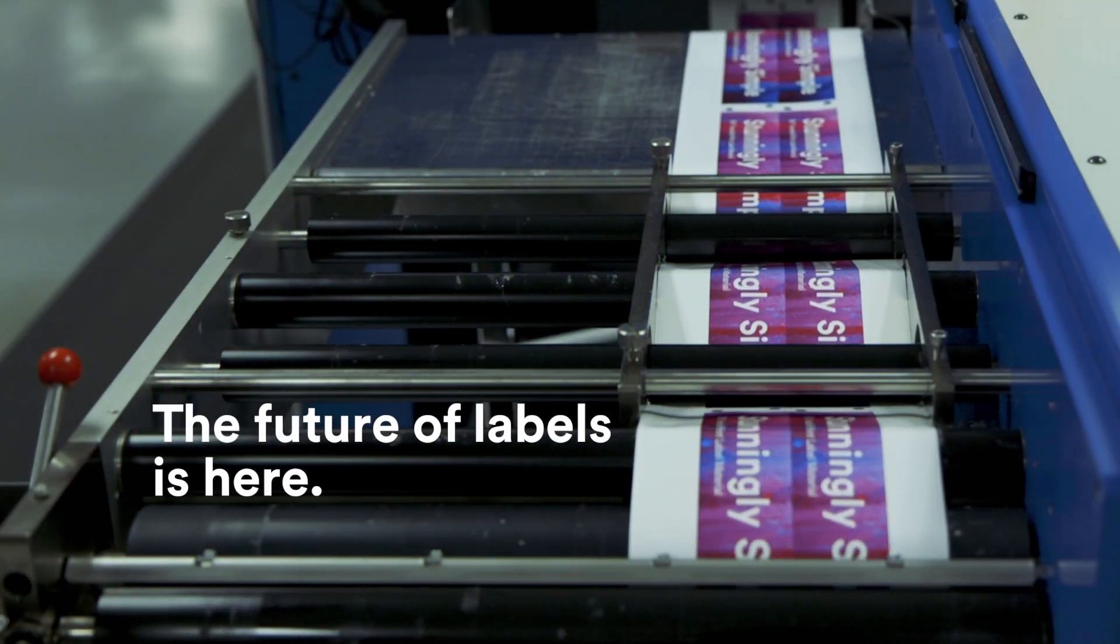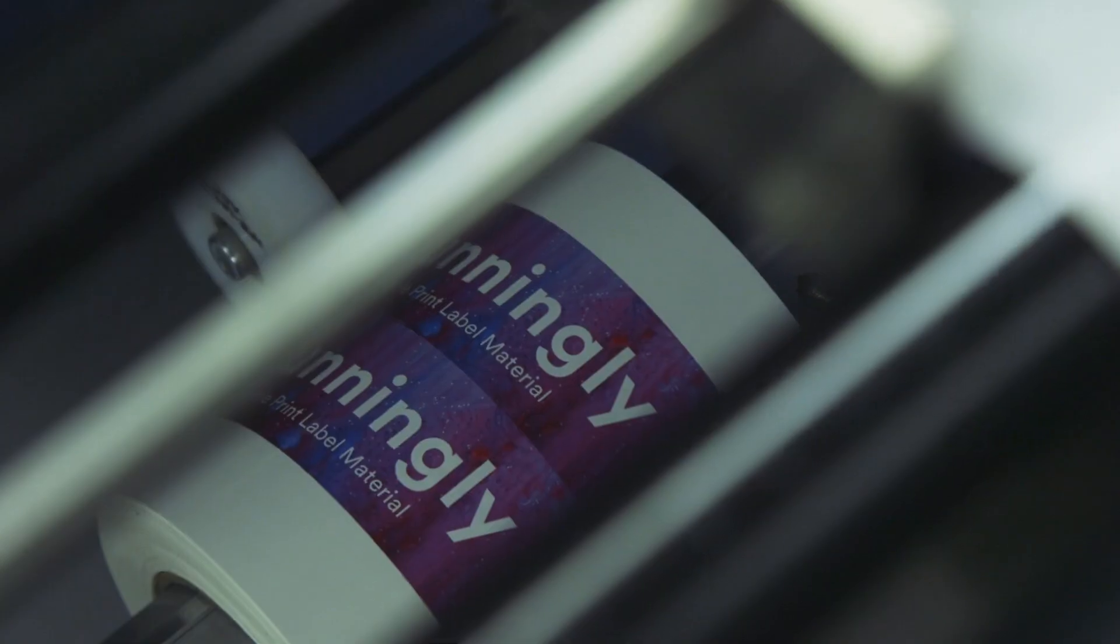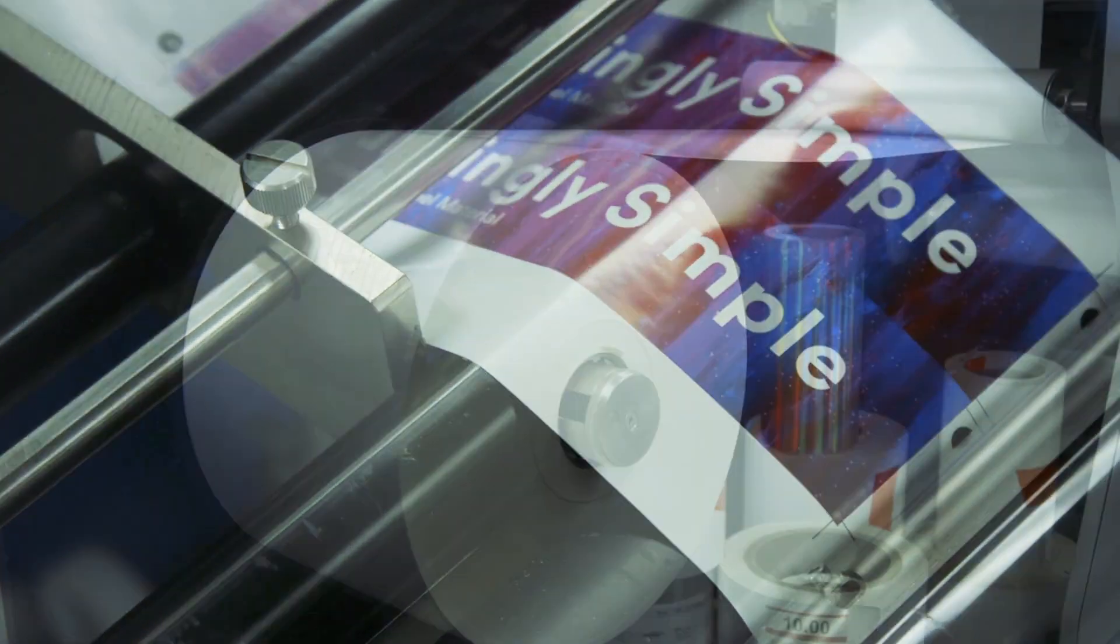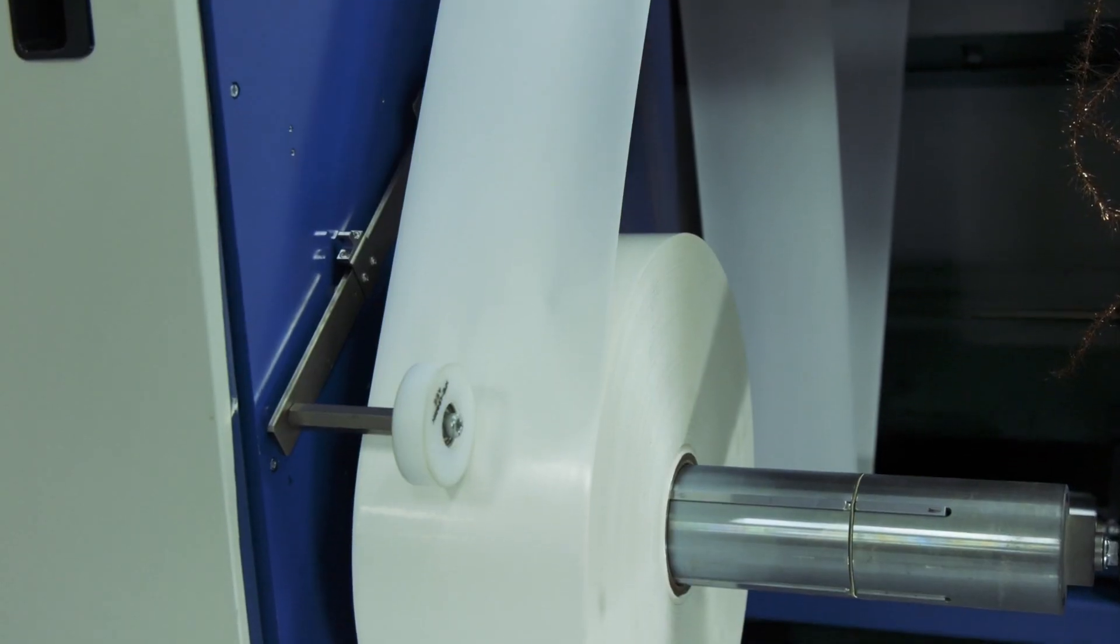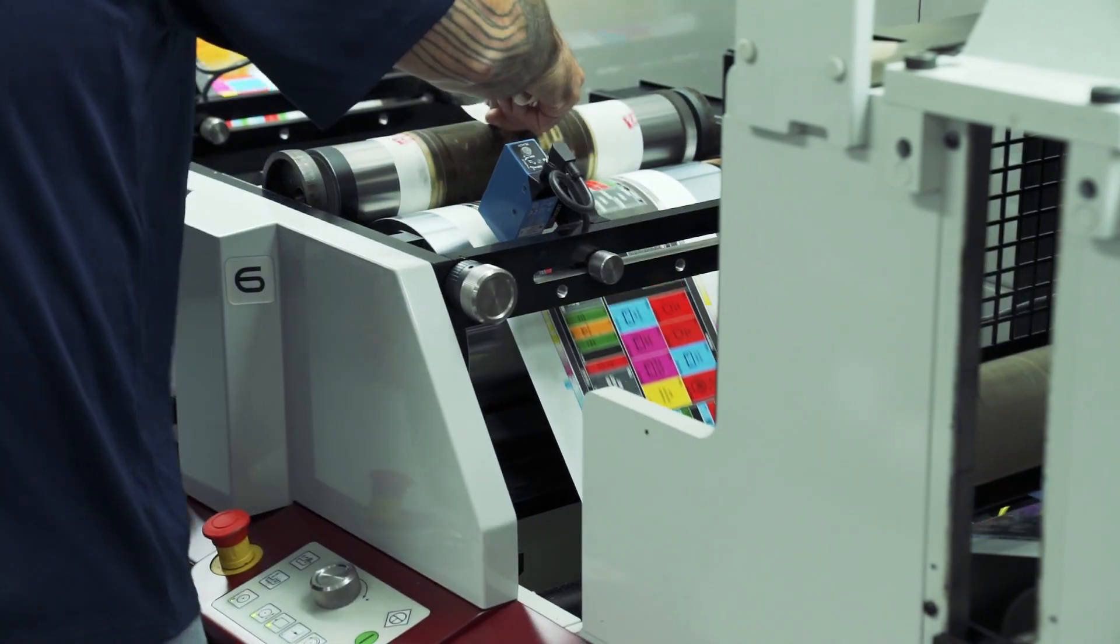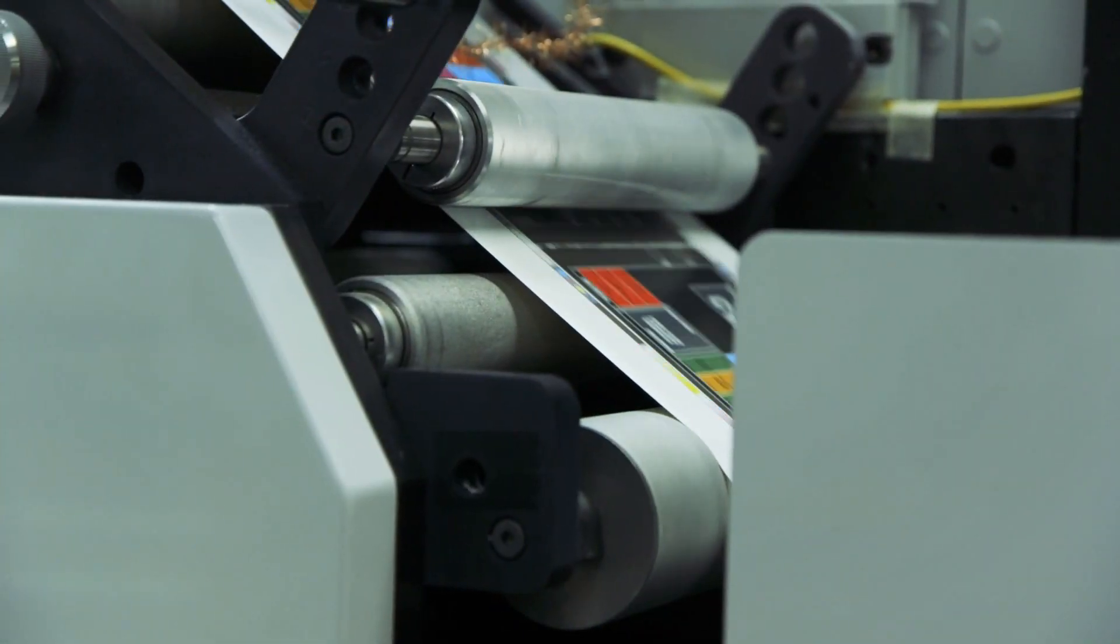The future of labels is here. No matter what printing process you use, 3M Versatile Print Label Material is the go-to durable label that you need in your portfolio. Simplify your inventory, simplify your workflow, and deliver your customers stunning results.